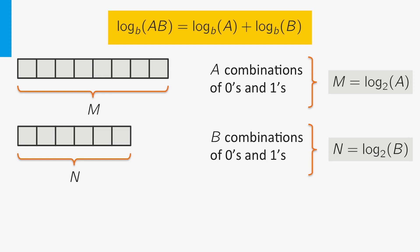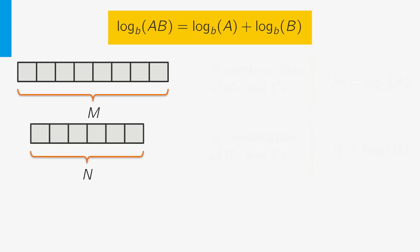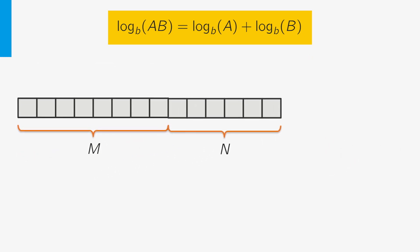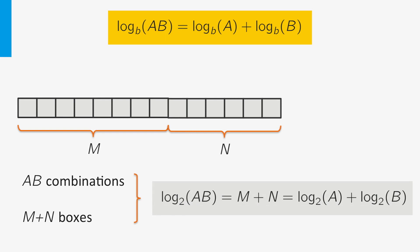We have a second set of boxes with which we can make B combinations, so the number of boxes equals N which is the log of B. If we put all boxes together we can make A times B combinations, and the number of boxes is N plus M. This means that log of A times B is equal to M plus N which is equal to log of A plus the log of B, which illustrates the general rule.